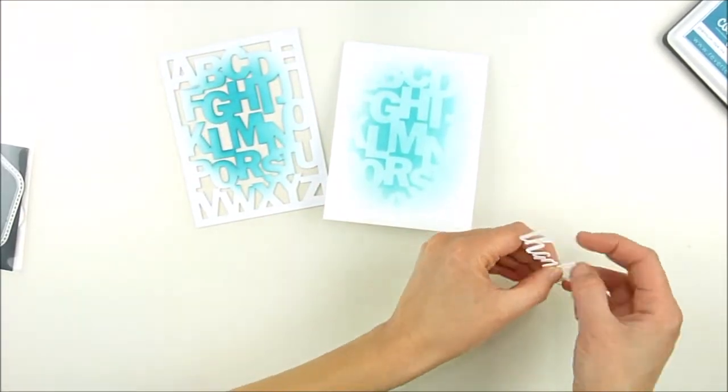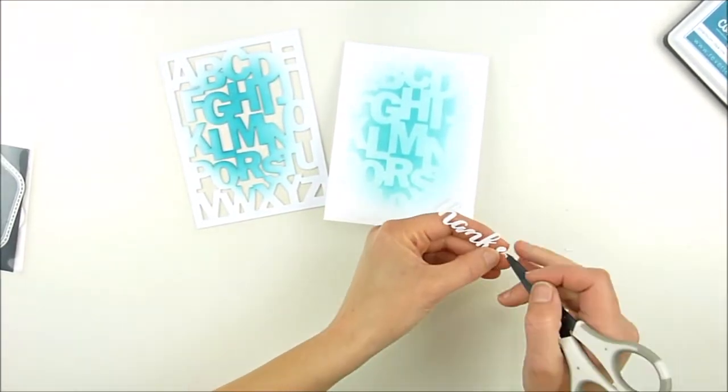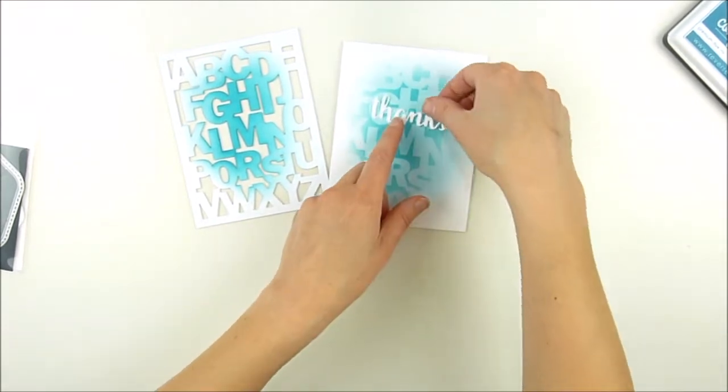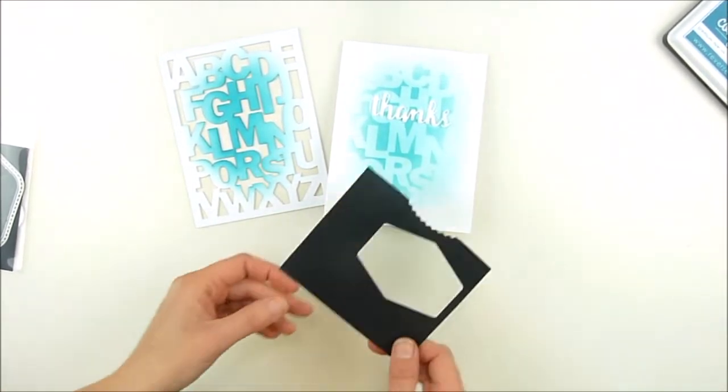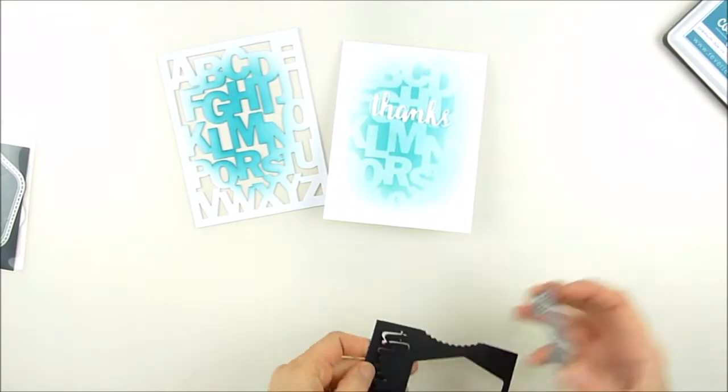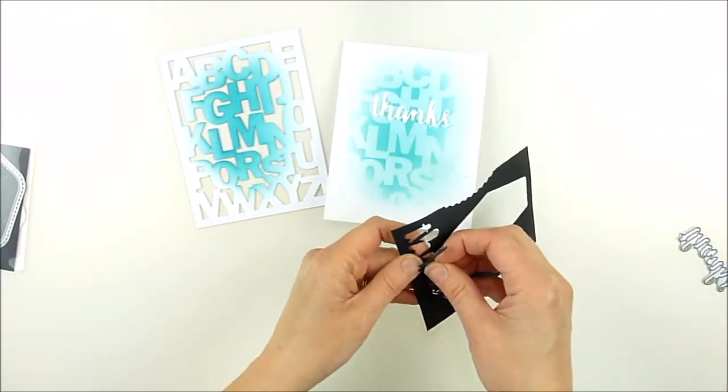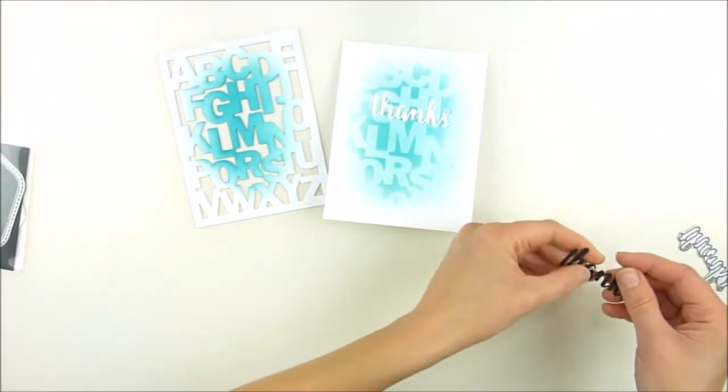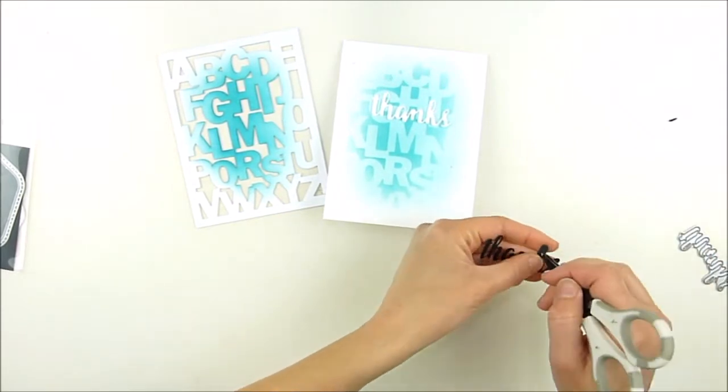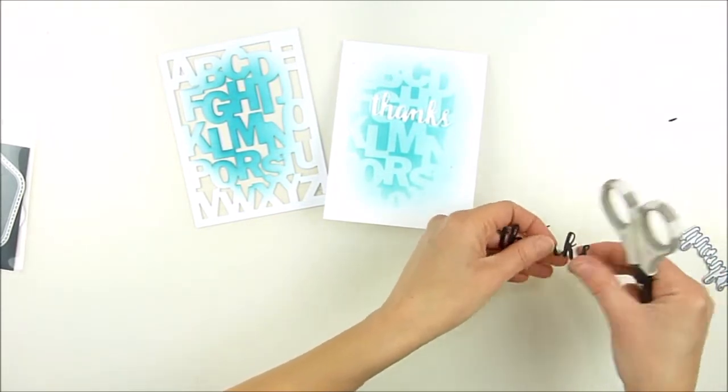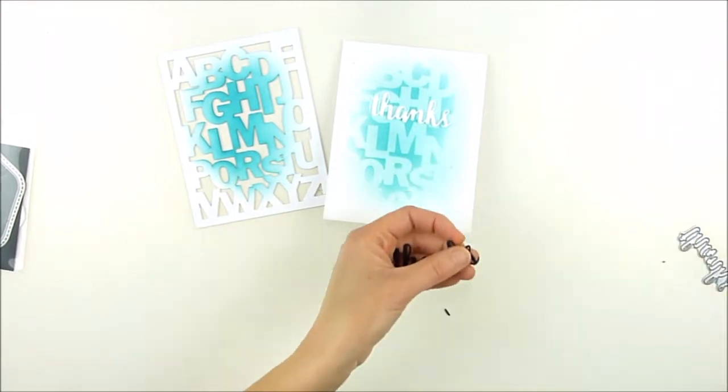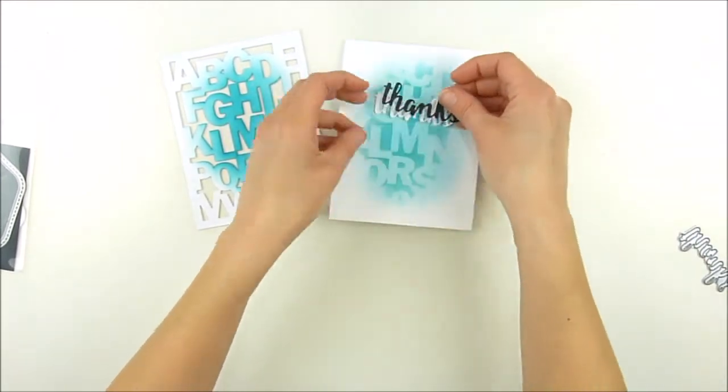Now I'm going to add a die-cut word using the Hello and Thanks Label Confetti Cuts. I start off by die-cutting it from white, but as soon as I kind of set it on there, I just felt like it didn't quite pop and show enough. So I die-cut it again from midnight cardstock and I'm going to layer these two together just to add a little bit of depth and dimension to that die-cut sentiment.